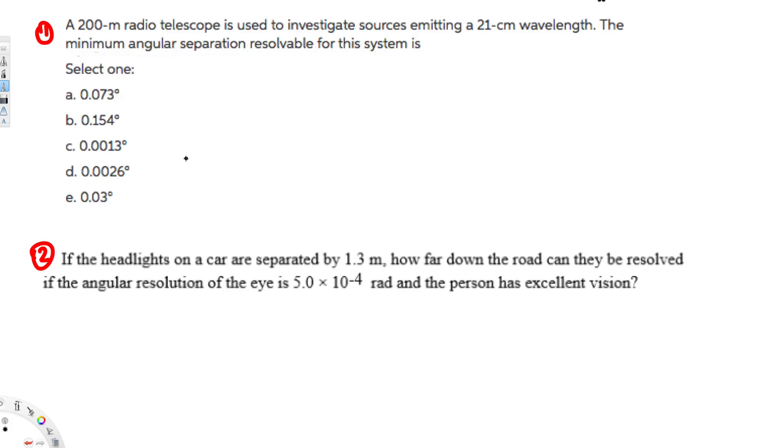The first question is asking: a 200 meter radio telescope is used to investigate sources emitting a 21 centimeter wavelength. The minimum angular separation resolvable for this system is what?